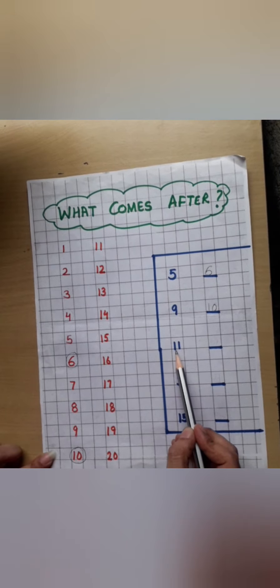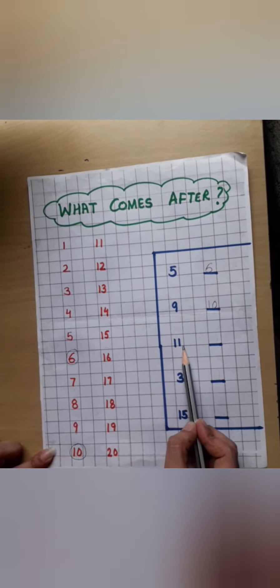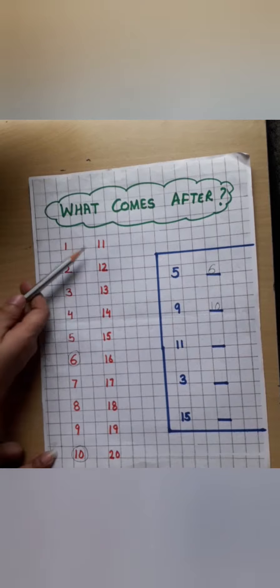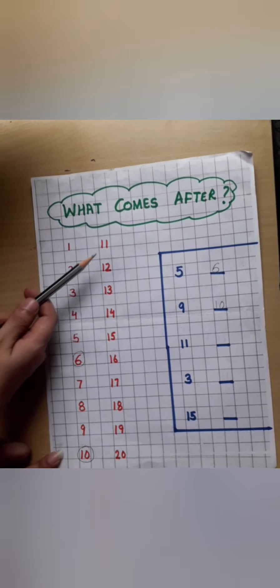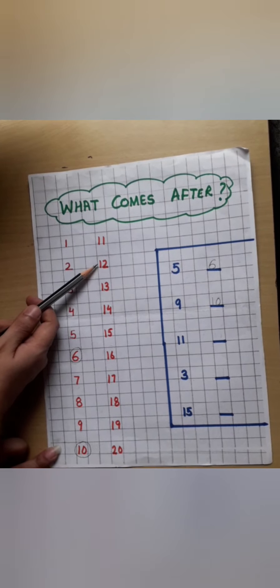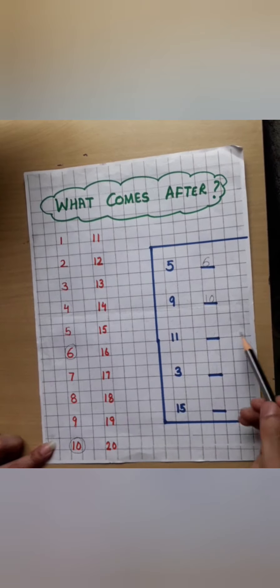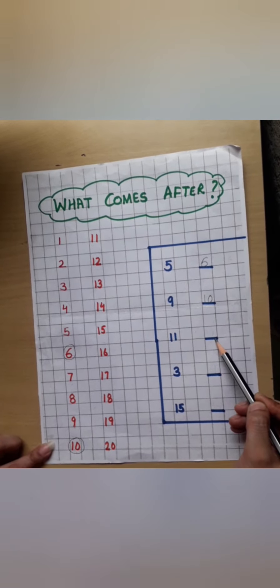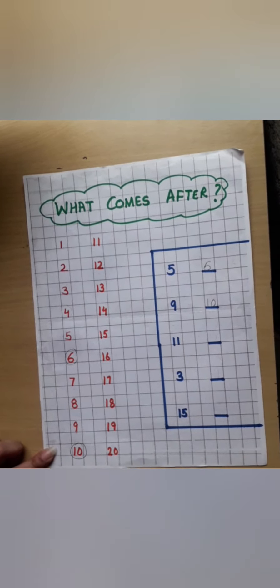Now see the another number. Which number? 1, 1, 11. And here is the number 11. What comes after 11? 12. Very good. Now what you will write? You will write the number 12 here.